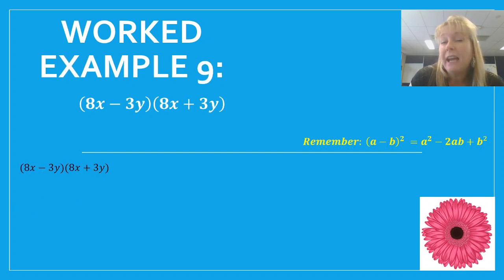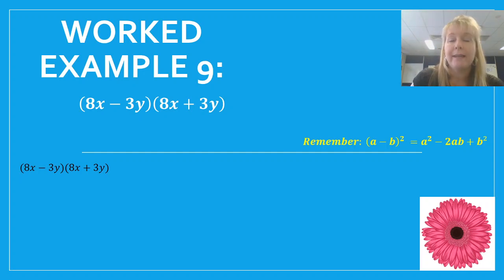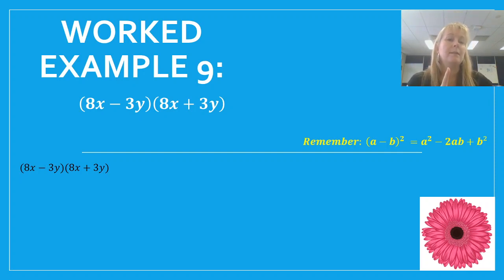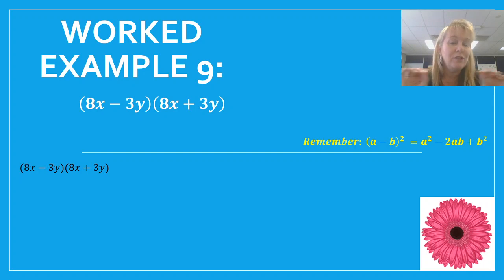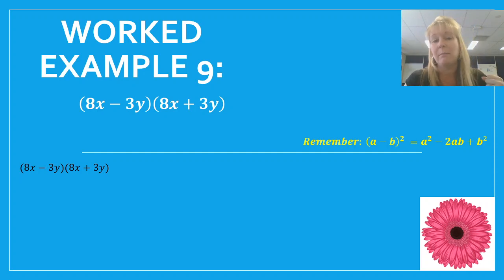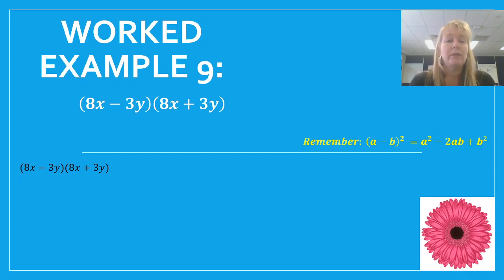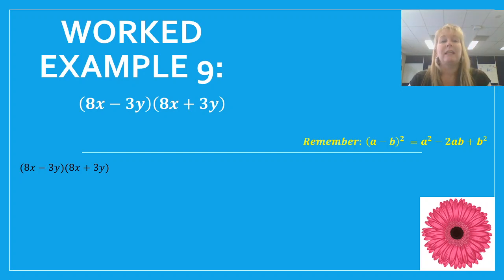Let's do something slightly harder: 8x minus 3y multiplied by 8x plus 3y. I check: is the first term the same in both brackets? Yes. Is the second term the same? Yes. Do they differ only by sign? Yes — and it doesn't matter that the first has minus and the second has plus, since order of multiplication doesn't matter. Using the DOPS rule: first term 8x squared gives 64x squared, subtraction sign, and last term 3y squared gives 9y squared. Answer: 64x squared minus 9y squared.